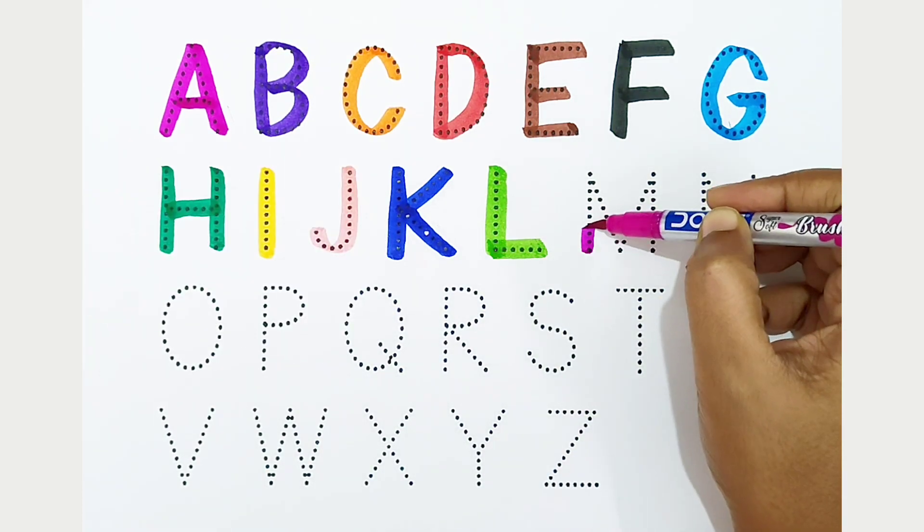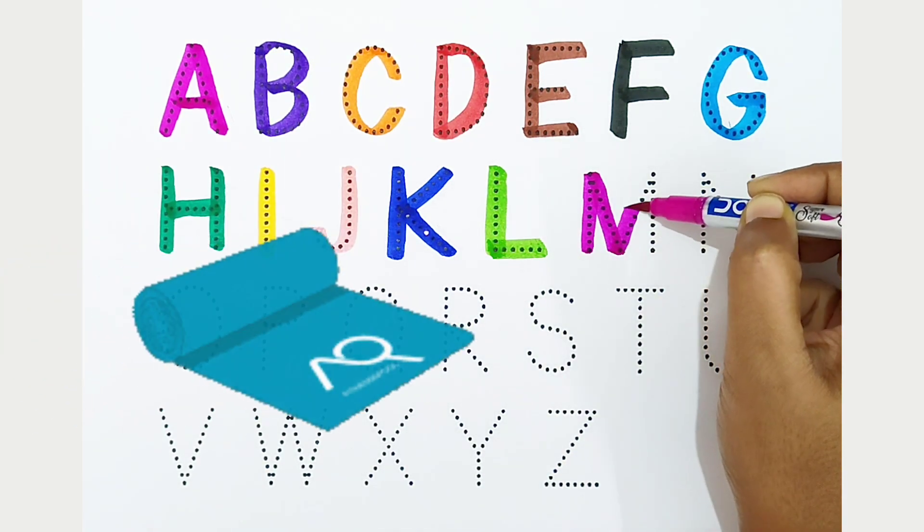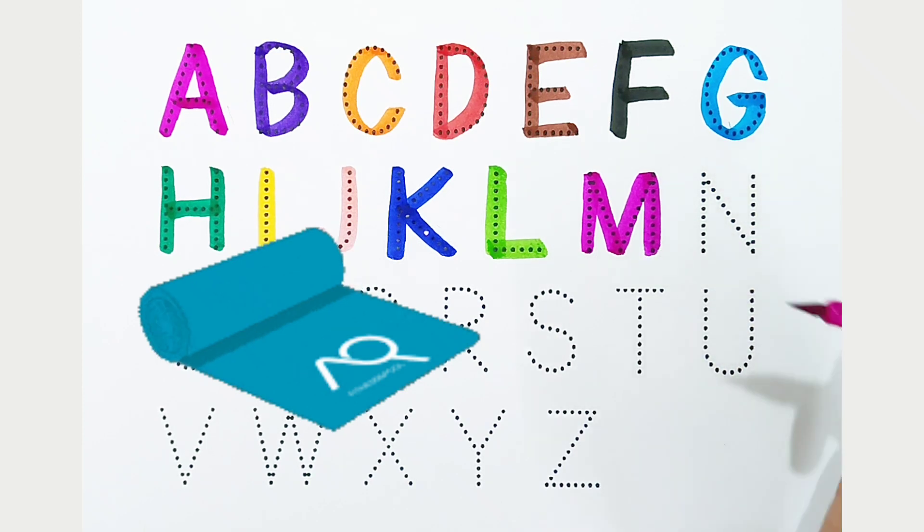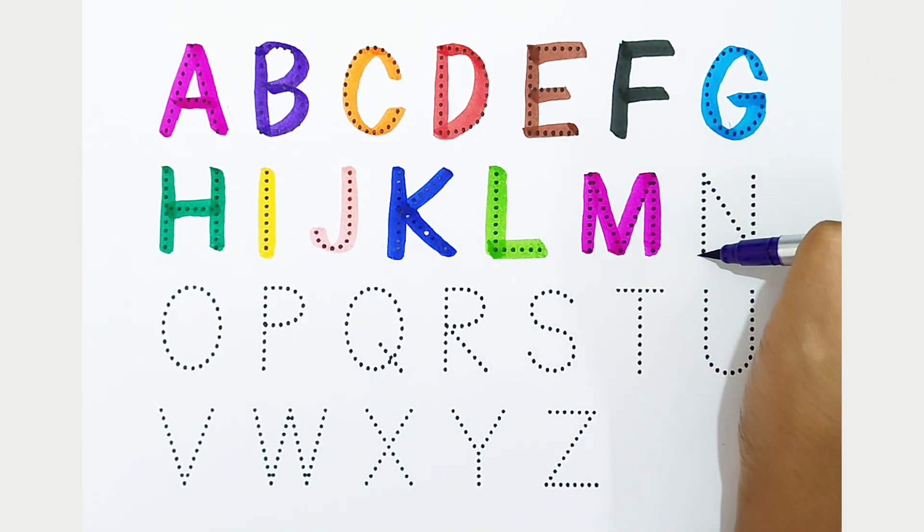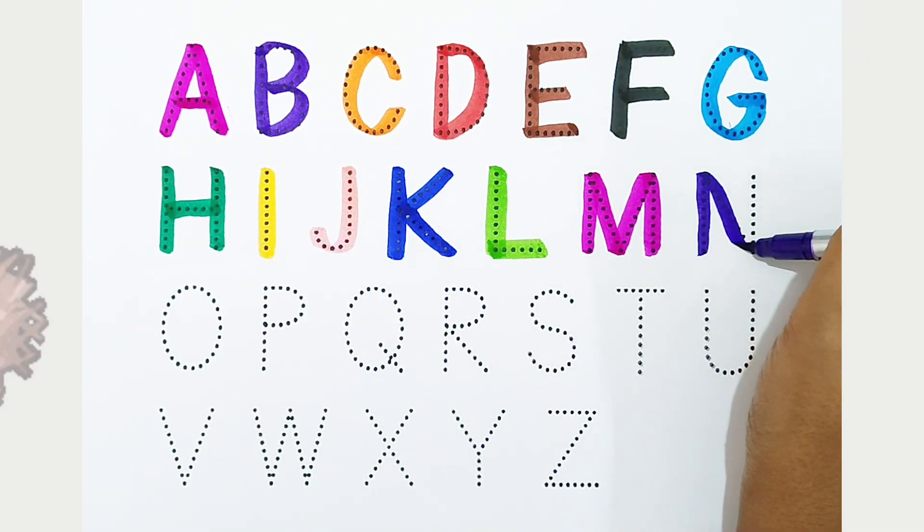M: dark pink color. M is for mat. N: violet color. N is for nest.